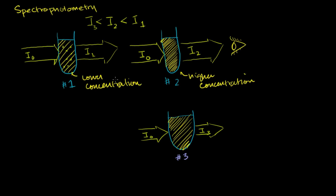The next question is: what is it even good for? Why would I even care? You could actually use this information — you could see how much light is transmitted versus how much you put in — to actually figure out the concentration of a solution. That's why we're even talking about it in a chemistry context. So before we do that — and I'll show you an example in the next video — let me define some terms for ways of measuring how concentrated a solution is, or ways of measuring how much light is transmitted versus how much was put in.